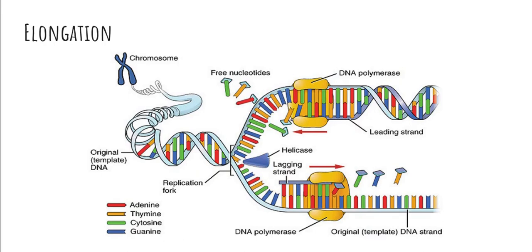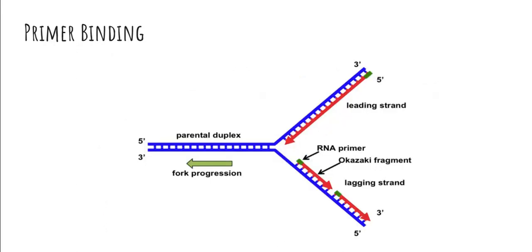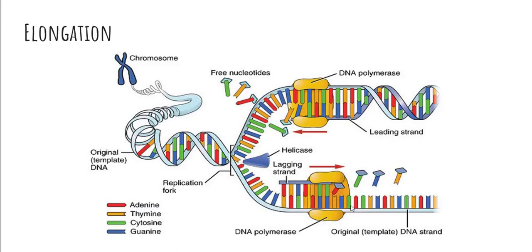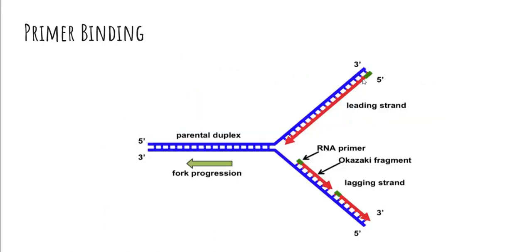The third step is elongation. As the name implies, the two new strands of DNA are elongated into full strands, shown by the orange arrows in this picture. In this process, enzymes known as DNA polymerases start at the RNA primers and go along the individual strands of DNA, adding the complementary base pairs. This forms two identical copies of the original. Looking at the parent duplex, for the top strand we start with the five prime to three prime strand.